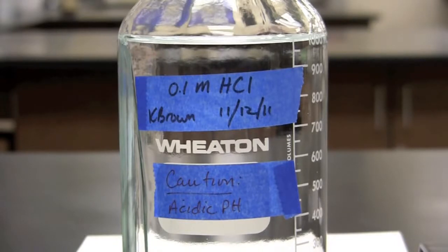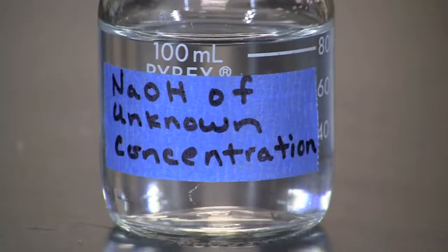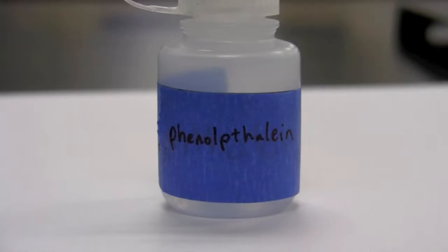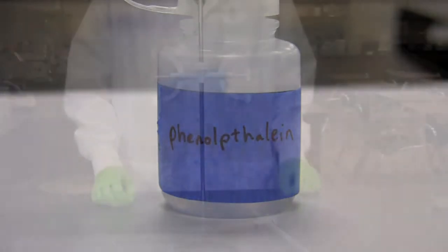For this titration we will be using 0.1 molar hydrochloric acid to determine the unknown concentration of a sodium hydroxide solution. The progression of the reaction will be determined using phenolphthalein, a pH indicator that is colorless in an acidic environment and pink in a basic environment.